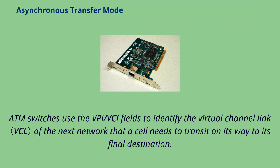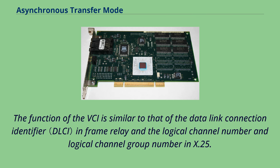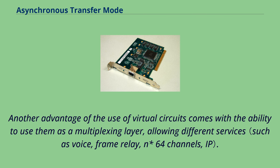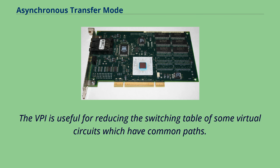The function of the VCI is similar to that of the data link connection identifier in frame relay and the logical channel number and logical channel group number in X.25. Another advantage of virtual circuits is the ability to use them as a multiplexing layer, allowing different services. The VPI is useful for reducing the switching table of some virtual circuits which have common paths. ATM can build virtual circuits and virtual paths either statically or dynamically.